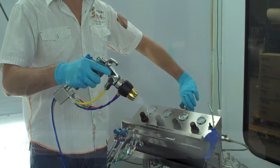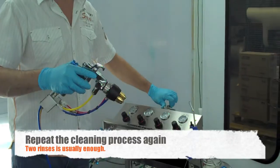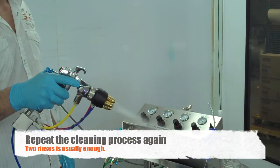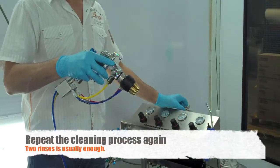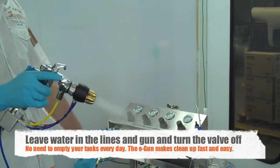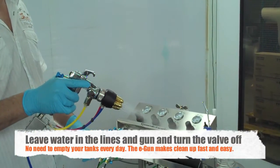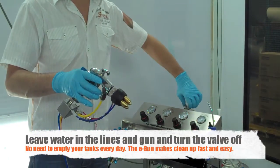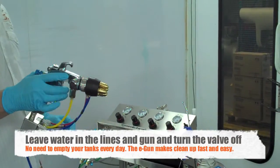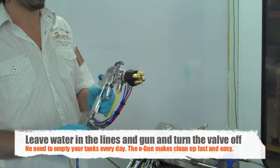Once we've done the water, I usually go back one more time to air, pushing out the water. Again, back to water on, leaving the lines filled up with water, and then we turn it in the off position and shut off the power. That will keep your gun clean with no problems.